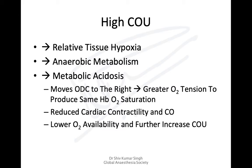High coefficient of utilization leads to relative tissue hypoxia. With increased requirement and reduced delivery, anaerobic metabolism sets in, causing metabolic acidosis. From the oxygen dissociation curve, we know that acidosis shifts the curve to the right — requiring higher partial pressures of oxygen to maintain the same tissue oxygen saturation. Metabolic acidosis also affects cardiac contractility and output, further reducing oxygen delivery, creating a vicious cycle.